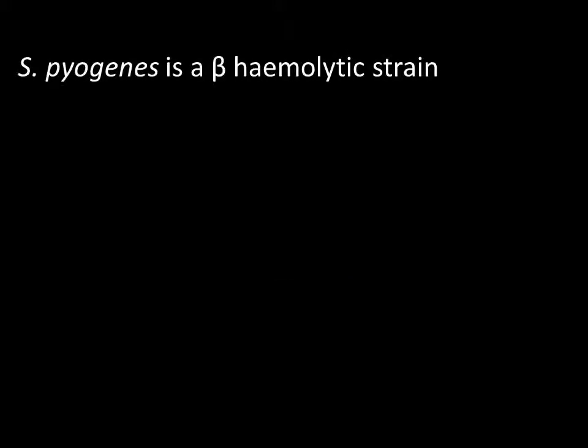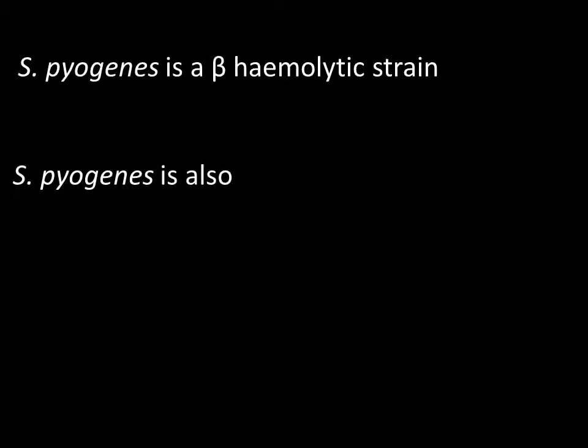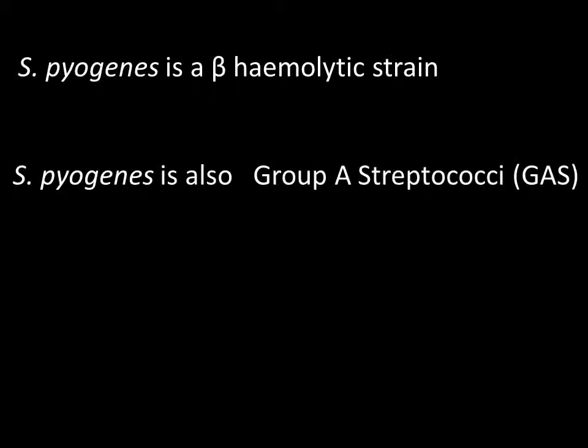When doing your reading, you'll probably see that strep pyogenes is referred to as a beta hemolytic strain, but it is also referred to as group A streptococci, or GAS. I wanted to spend a little bit of time clarifying what we mean by group A, because if we have group A then it suggests we have a group B, group C, group D, and so on - so what do we mean by this?